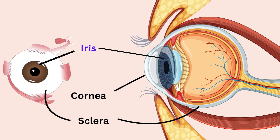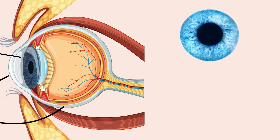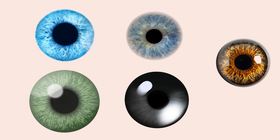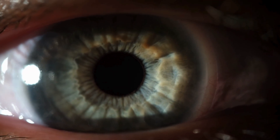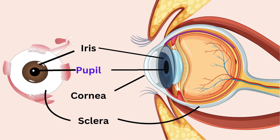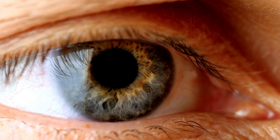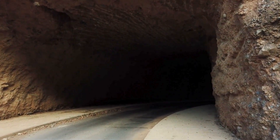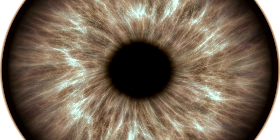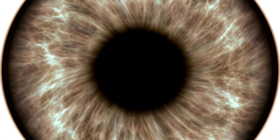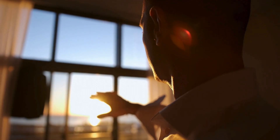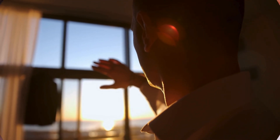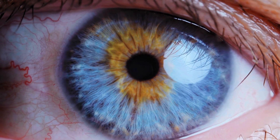Behind the cornea lies the iris, the colored part of the eyeball. It can be blue, green, gray, black, or brown. The iris controls how much light enters the eye with the help of the pupil — an adjustable opening that appears as the black part in the center of the iris. The iris is present in the middle vascular layer of the eyeball called the choroid. When you enter a dark area, your pupil dilates to allow more light to enter. In bright sunlight, your iris contracts, making your pupil smaller to reduce the amount of light entering.